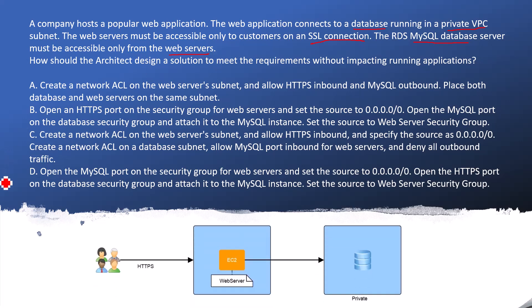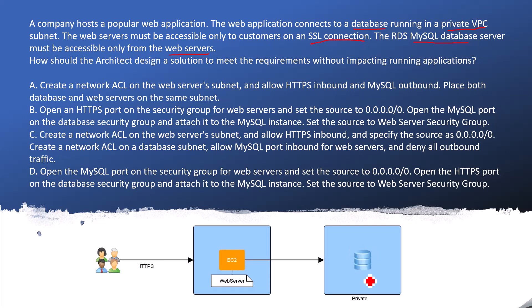If we try to visualize the question, the diagram is simple: the user is trying to access through the HTTPS protocol. This EC2 instance in the subnet is the web server. The web server must connect to the database, but no other server can connect to the database, which is in the private subnet.